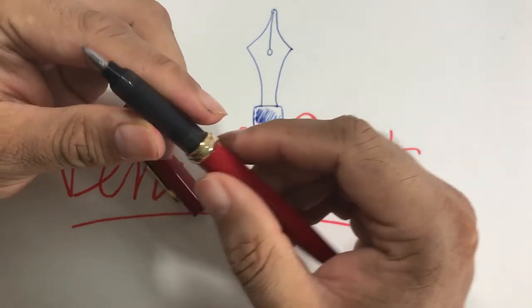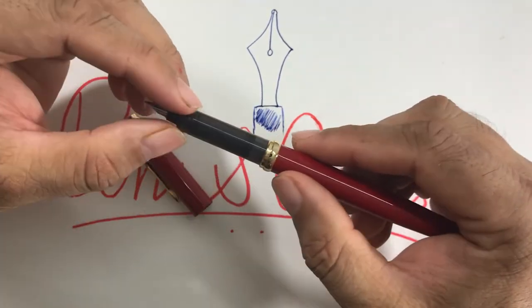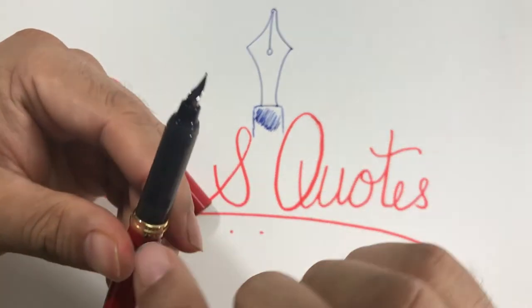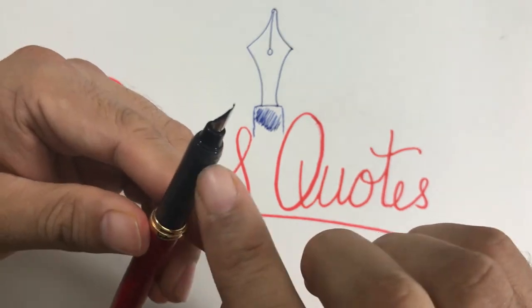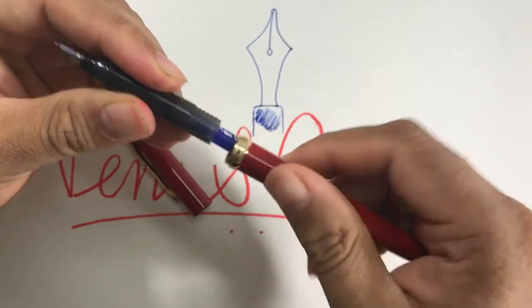This is a small nib but it writes well. The grip section is totally plastic. You can see the feed inside the nib. It's just like a Pilot pen feed, and I have fit the cartridge here.